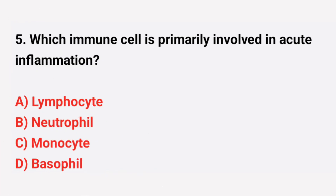Question number 5: Which immune cell is primarily involved in acute inflammation? The right answer is option B: Neutrophil.